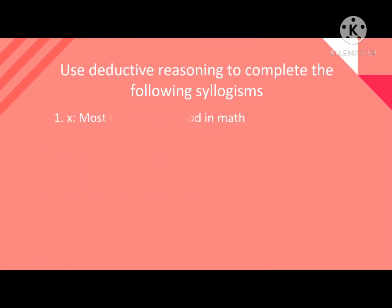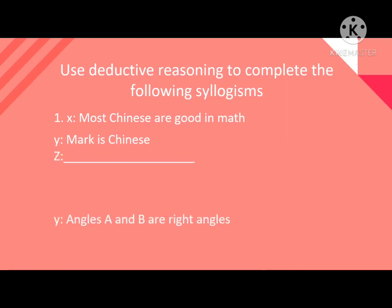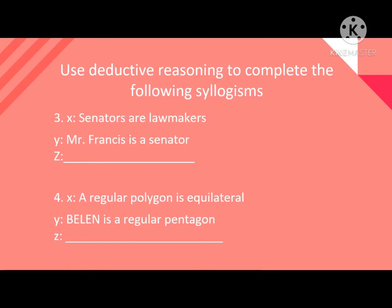Use deductive reasoning to complete the following syllogisms. Number one: most Chinese are good in math — general statement; Mark is Chinese — particular statement. Write your answer for the conclusion. Number two: right angles are congruent — general statement; angles A and B are right angles — particular statement. Write your answer for the conclusion. Number three: senators are lawmakers; Mr. Francis is a senator. Write your answer for the conclusion.